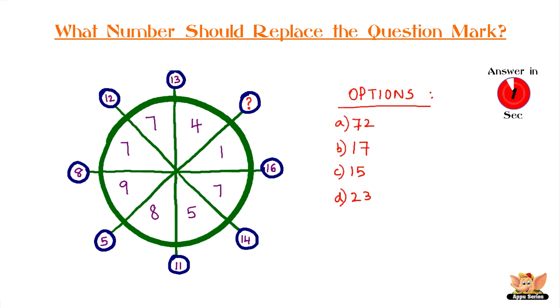Have you got your answer ready yet? Answer is option B: 17. It is the sum of the two digits, 9 plus 8, in the quadrant opposite.